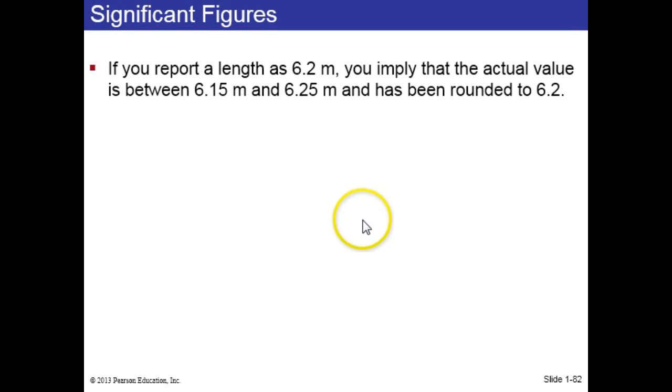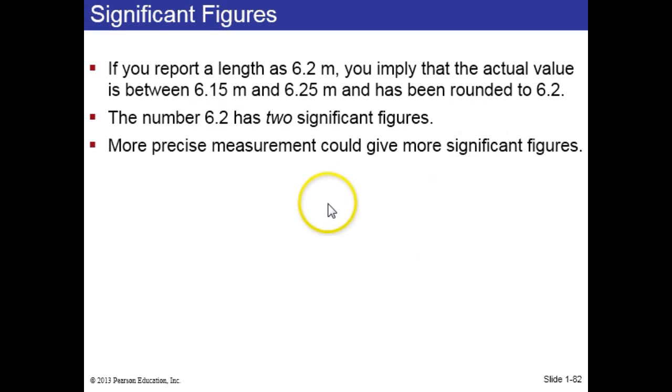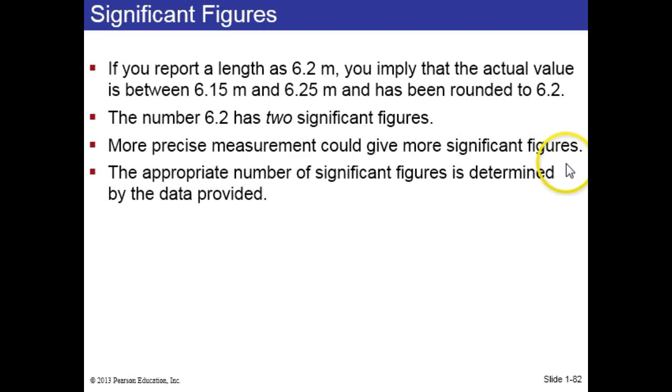Significant figures. If you say that the length from here to there is 6.2 meters, what you're implying there is that you might have rounded. The actual value might be somewhere between 6.15 and you round it up, and as high as 6.25 or 6.24 or something, and you round it down. So, we say that the 6 and the 2 are significant figures. So, a figure is like a digit. So, this could also be two significant digits or sig figs. If you made a more precise measurement, you're more careful, you could give more significant figures. And the appropriate number of significant figures is determined by what data you take.